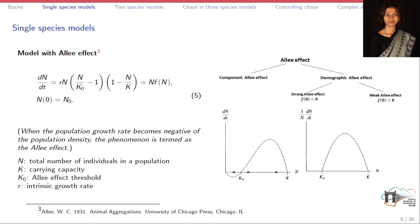The demographic Allee effect can be further categorized into strong Allee effect and weak Allee effect. If the growth rate of the population is initially positive — f(0) > 0 — it is termed strong Allee effect. Some populations possess a threshold K₀: solutions with initial conditions above K₀ approach K, while populations below the threshold decay to zero. The per capita growth rate also shows an increase over a certain range of density, as seen in the figure.